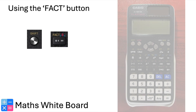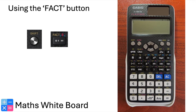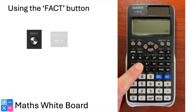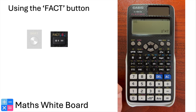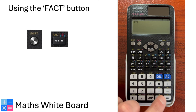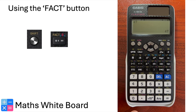In this instructional video, we will be looking at how to express a number as a product of prime factors. This method provides a quick and efficient way to analyse the prime factorisation of a given number. First, enter the desired number into the calculator. Locate the prime factorisation function — usually denoted as FACT, a secondary function activated by using the Shift key first. Select Shift, then the FACT button. The calculator will display the prime factorisation of the entered number. If the calculator returns the same number, this indicates that the number is prime — i.e., it can only be multiplied by itself and one.